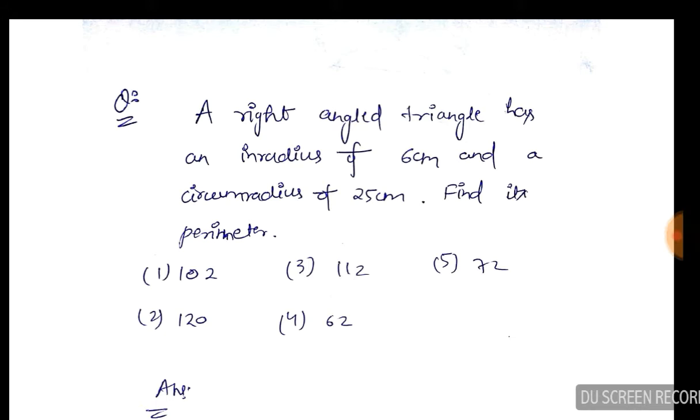Look, the question in front of me is that a right angled triangle has an inradius of 6 cm and circumradius of 25 cm. Find its perimeter.